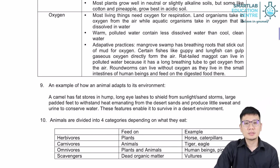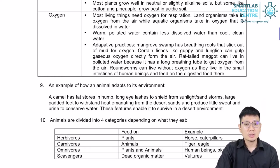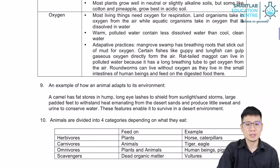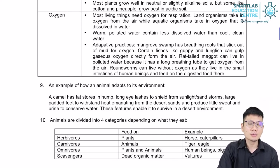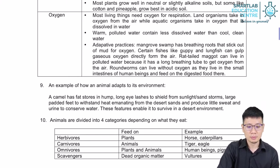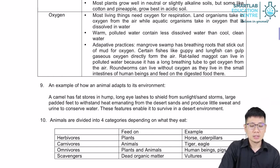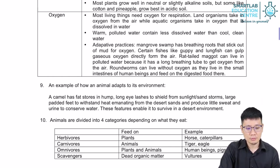Depending on the habitat that these plants or animals live in, they may have adaptations to help them survive. But whatever adaptation they may have, all living things in any habitat can generally be classified into certain groups based on how they survive — what they eat or consume, or whether they can make their own food. You've probably heard of the terms herbivore, carnivore, omnivore, and scavenger.